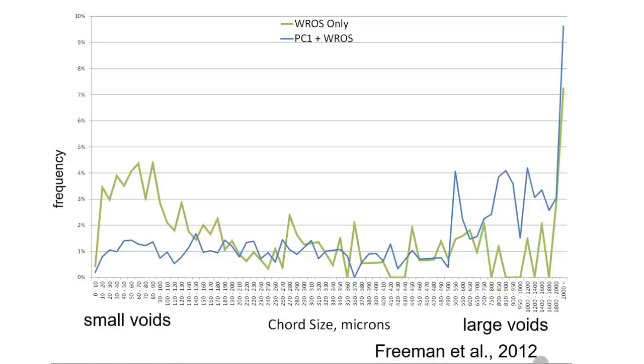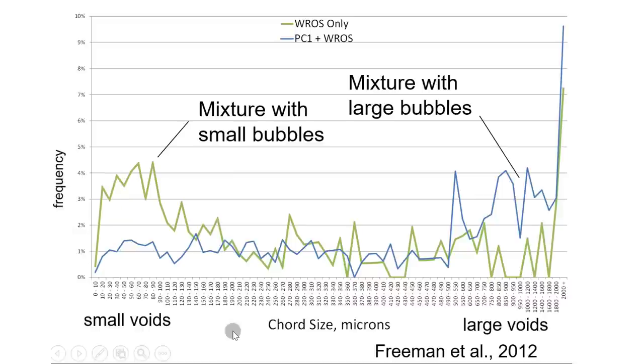Here's another way to look at this. This is the sizes of the cords, this is small voids, this is large voids, and this is the frequency or how often they occur. The green line here is made up of mainly small bubbles and the blue is made up of mainly large bubbles. If we had to pick we would much rather have the green.